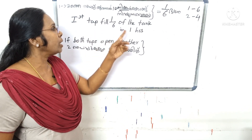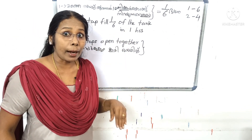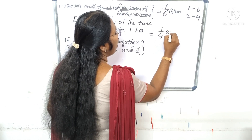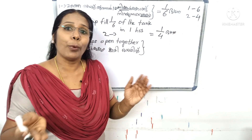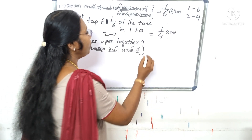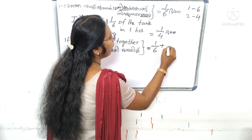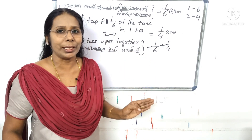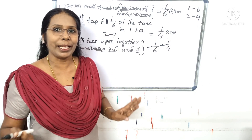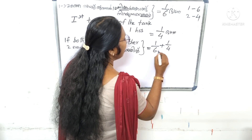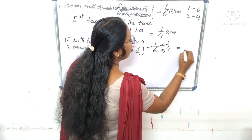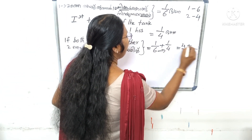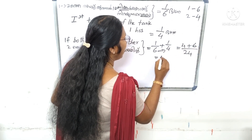In the first case, one pipe fills 1/6 of the tank in 1 hour. In the same way, the other fills 1/4 of the tank in 1 hour. Now in the second step, we have to do cross multiplication. We get 6 × 4 = 24. Then 1/4 + 1/6 gives us 4 + 6 = 10 over 24.